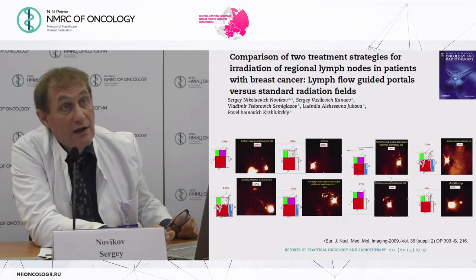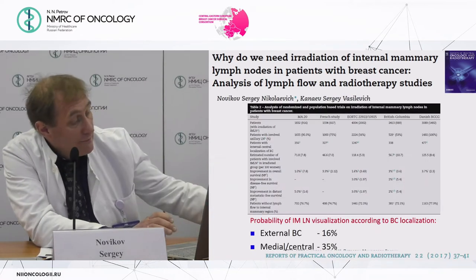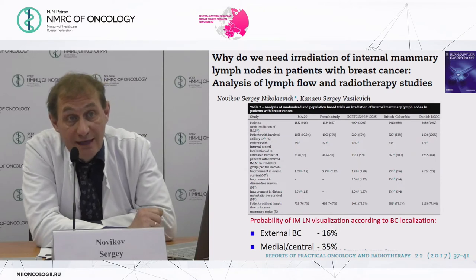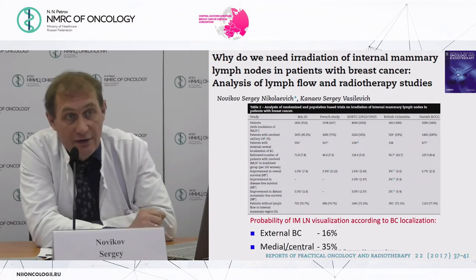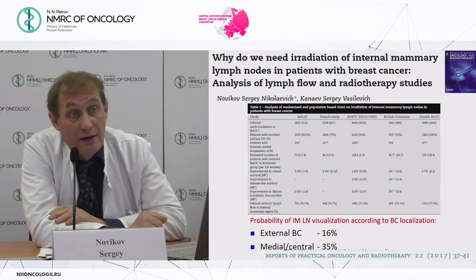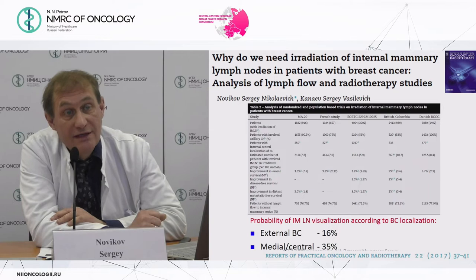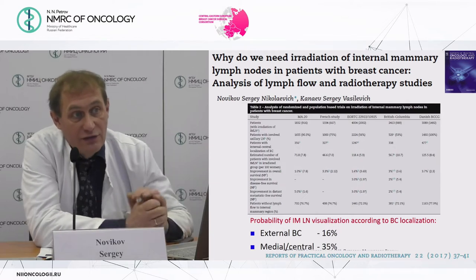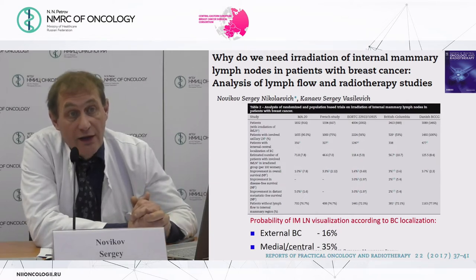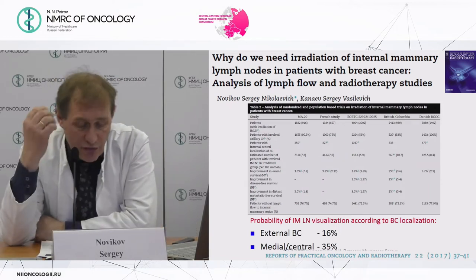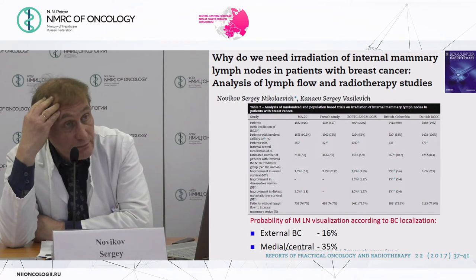The only localization where we act on this is the internal mammary lymph node. When thinking about irradiating internal mammary lymph nodes, we perform lymph flow investigation, looking for sentinel lymph nodes in the internal mammary subregion. If we see lymph nodes in this subregion, we irradiate them; if not, then we do not.